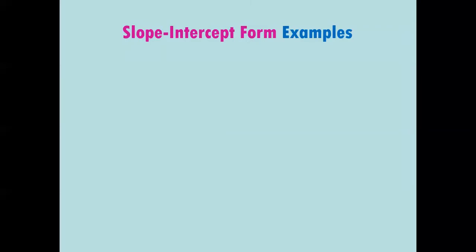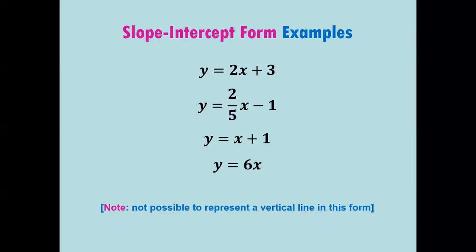Here are some examples of slope-intercept form. They should all look pretty familiar to you. Note that it's not possible to represent a vertical line using slope-intercept form.